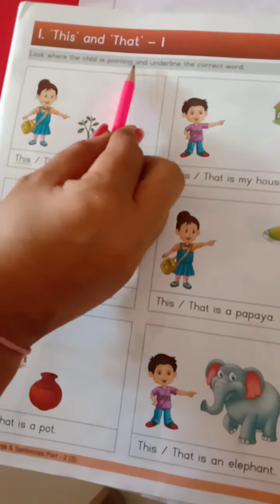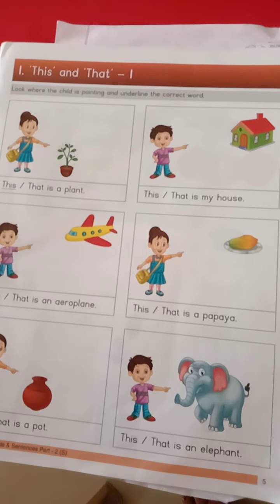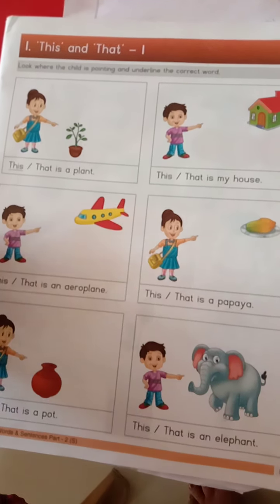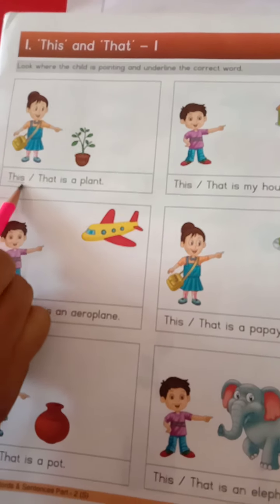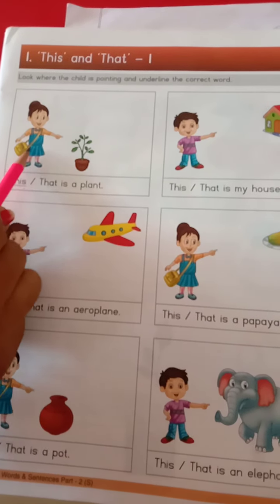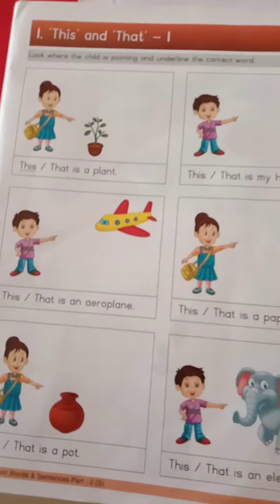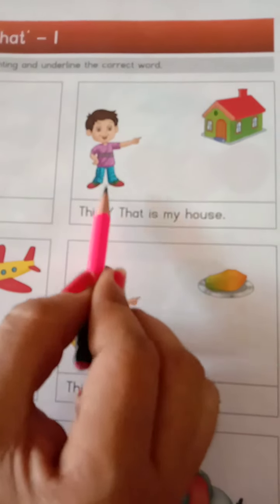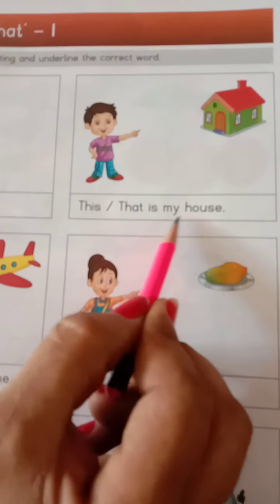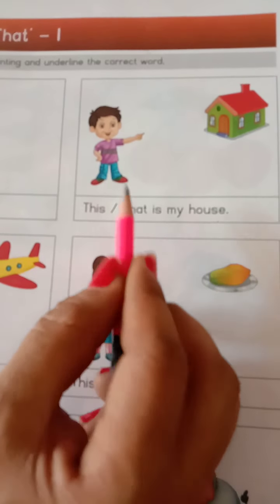Look where the child is pointing and underline the correct word. You have to do this — the child's picture is pointing, which word should be underlined? First: this or that — it is a plant, but here the girl is pointing.